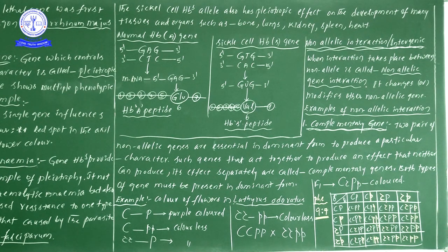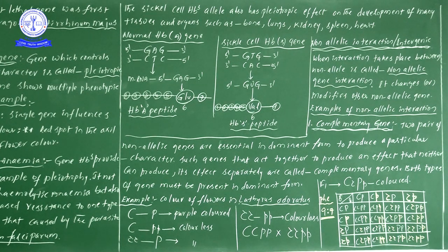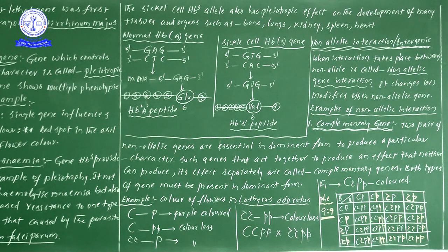That is the explanation of the pleiotropic gene in relation to sickle cell anemia. Till now we have learned information related to intragenic (allelic) interactions. Now let us see non-allelic interaction, also called intergenic interaction. Previously we studied allelic interaction; now we move to a new concept.